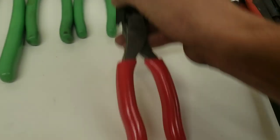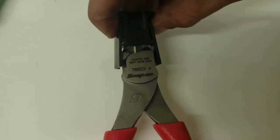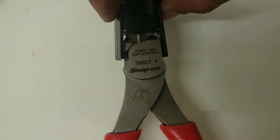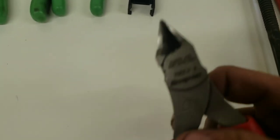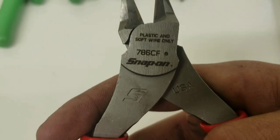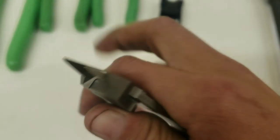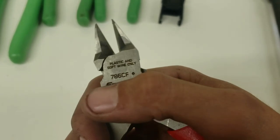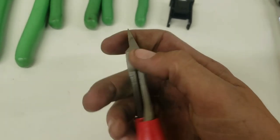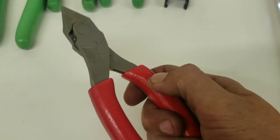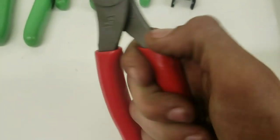Next are the Snap-on flush cuts, the 786CF. These are for plastic and soft wire only and come with a sheath cover. This is the newer style - the older ones I had got dull so I traded them in for this updated version. These are sharp as all get out and great for cutting wires.